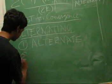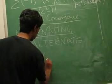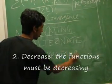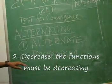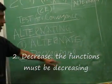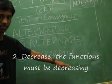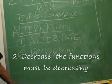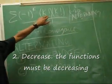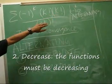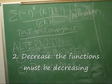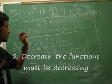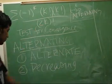Rule number 2: it must be decreasing. If it's not decreasing, it doesn't work. In this case, there are k's on the top and k's on the bottom, which means it will decrease because the denominator grows faster.